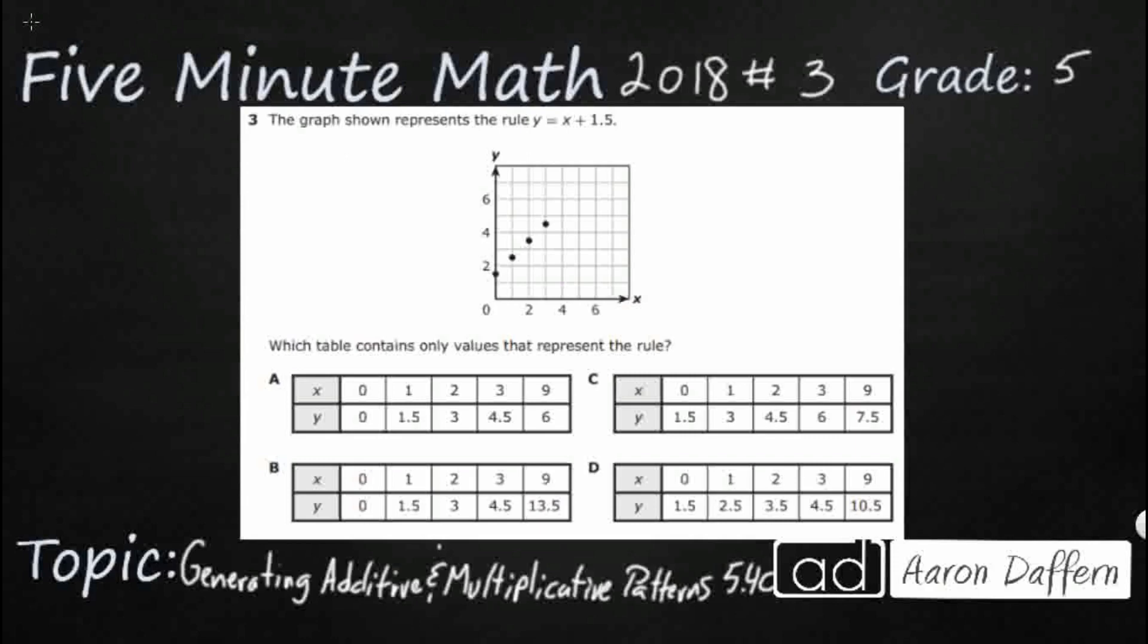We have a graph here that shows y equals x plus 1.5. That's going to give us an additive pattern. We need to find a table that contains only values that represent the rule, which means we don't really need the graph. We're going to need to match this equation with each of these values. We're going to use a strategy called substitution.